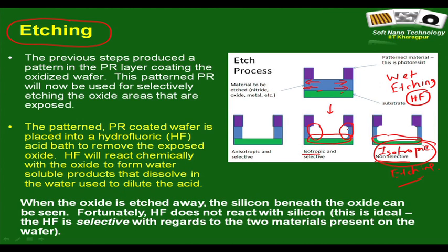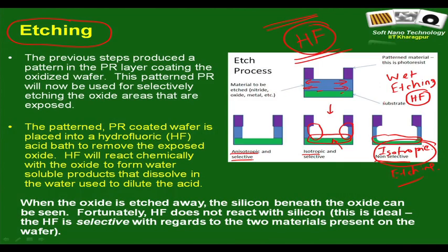Wet etching with HF can be selective — it does not affect the substrate — but it is isotropic, eating material laterally. Please be very careful: HF is a deadly material. If anyone is using HF or piranha solution, they appear to be very simple liquids but can lead to disaster. Wet etching is the easiest etching you can think of in a lab, but it does not provide proper selectivity or anisotropy in many cases.